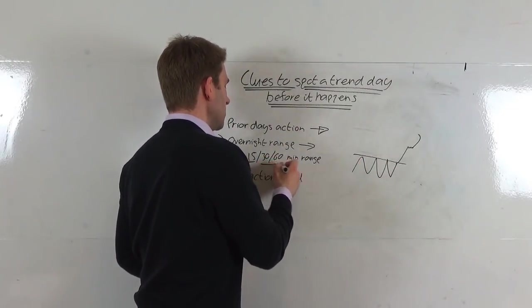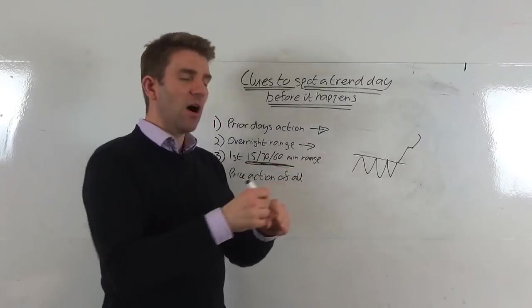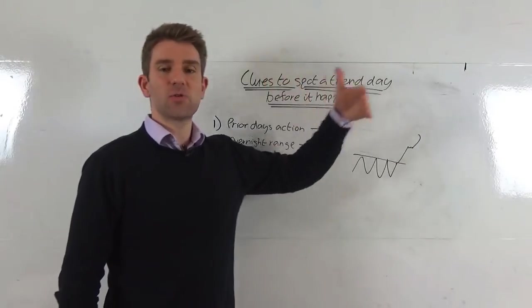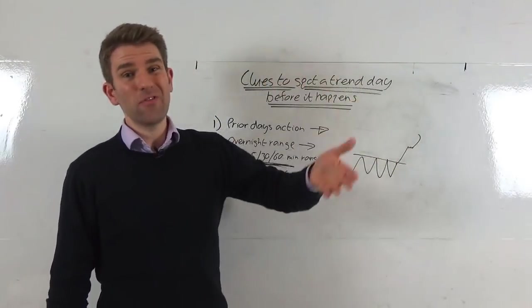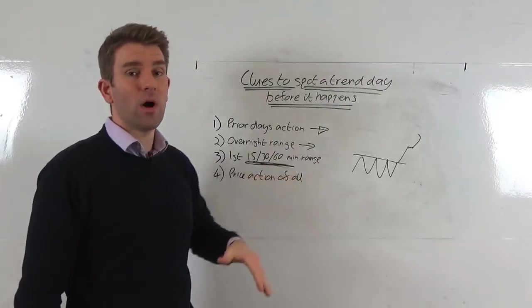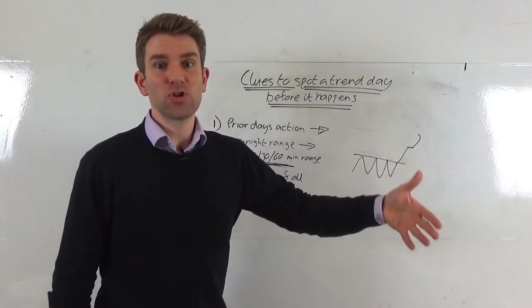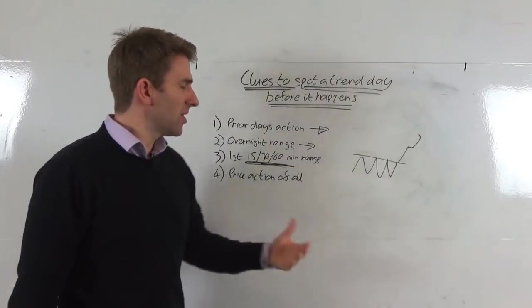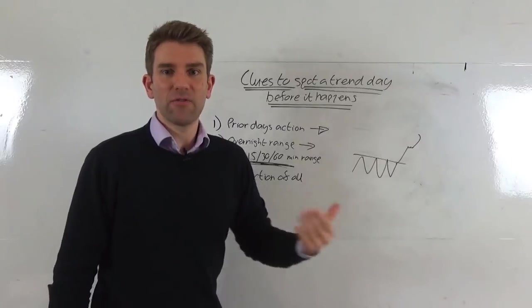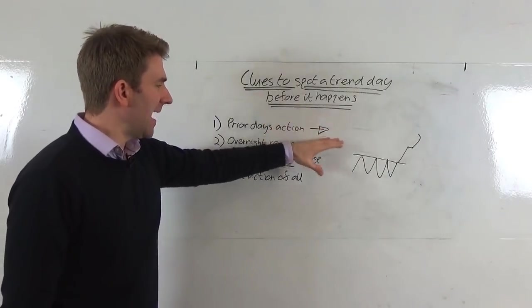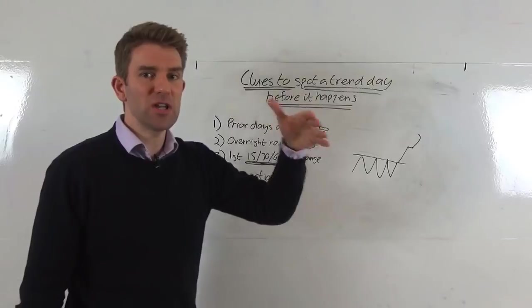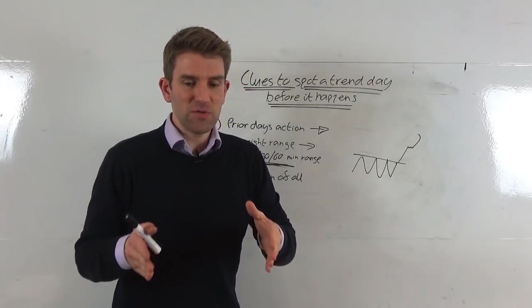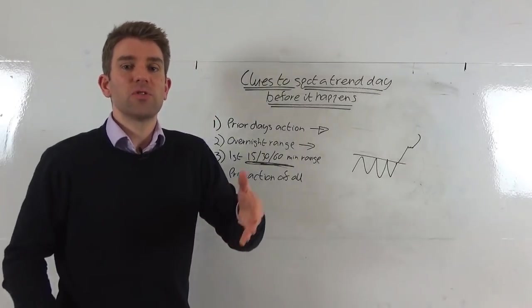Other clues: the first 15, 30, or 60 minute range. Are they large compared to prior days, weeks, whatever it may be? Use a comparison and say we've done 100 ticks in the first hour, normally we do 50, this looks like a good trend day. Obviously the later you leave it, the less juice you're going to get from the trade. You want to add these up and make your decision as early as possible. The earlier you get on it, the less information you've got that it's going to be valid, but of course the more meat on the bone you're going to get from the deal.